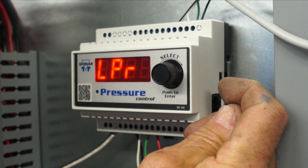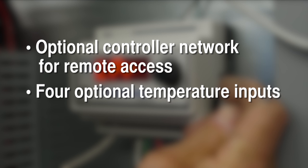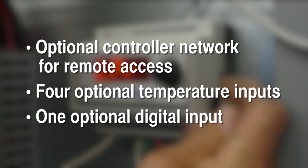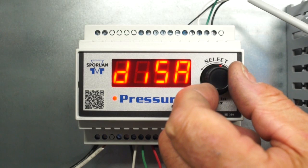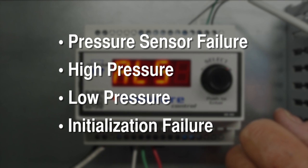Additional features of the Sporlin pressure control include optional controller networking for remote access, four optional temperature inputs, and one optional digital input for an external switch or relay. There is also an alarm output that alerts pressure sensor failure, high pressure, low pressure, and initialization failure.